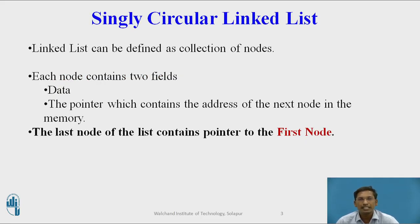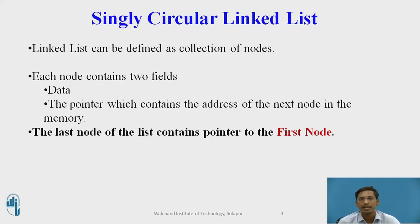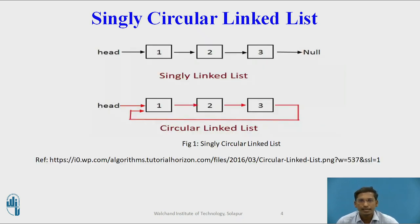We already know what a singly circular linked list is. In a linked list, it is a collection of nodes where each node contains two parts: data and the pointer part. In a singly circular linked list, the last node's next part will have the address of the first node. This is the difference between a singly linked list and a singly circular linked list, as shown in the diagrams above and below.